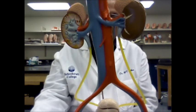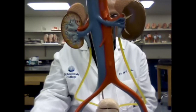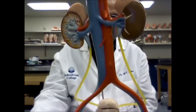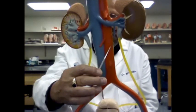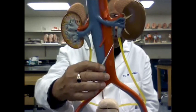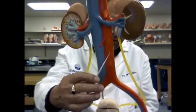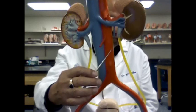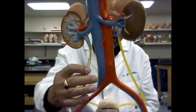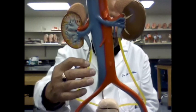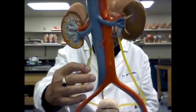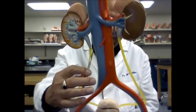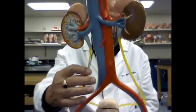Next, we are going to name the blood vessels on this model. The large red blood vessel is the abdominal aorta. Next to it, the large blue blood vessel is the inferior vena cava.